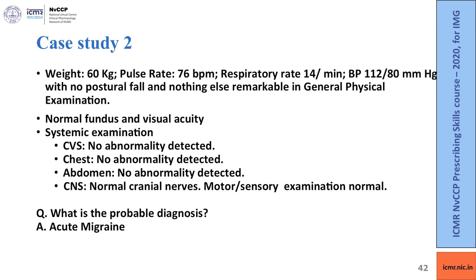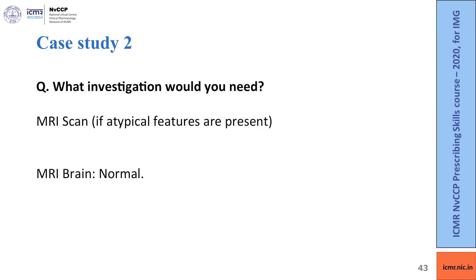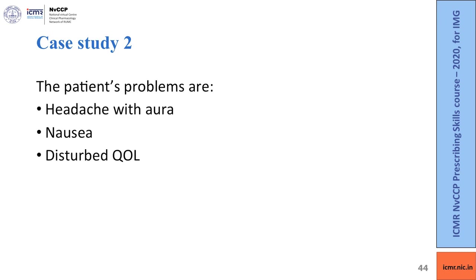The probable diagnosis is acute migraine. As this patient presents with acute onset headache with nausea and vomiting, imaging is obtained to rule out subarachnoid hemorrhage. An MRI scan is done and comes out normal.